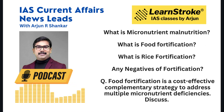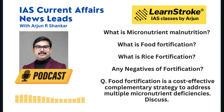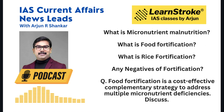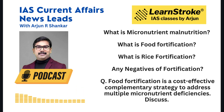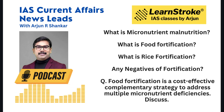Every second Indian woman is anemic, every third Indian child is stunted and malnourished, and every fifth child is wasted. The FAO Food Security Report for 2021 ranks India 101 out of 116 countries, with 15 percent of the population undernourished, as per the Global Hunger Index 2021. Food fortification is defined as adding vitamins and minerals to commonly consumed foods during processing to increase nutritional value. According to FSSAI norms, one kilogram of fortified rice contains 28 mg of iron, folic acid, and vitamin B12, with possible additions of zinc, vitamin A, B1, B2, B3, and B6.